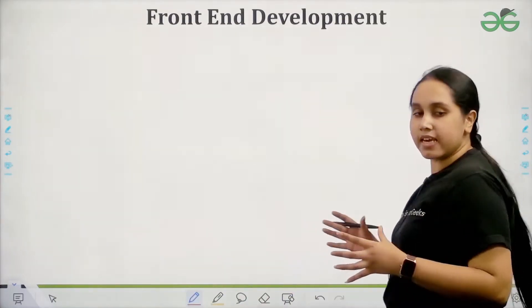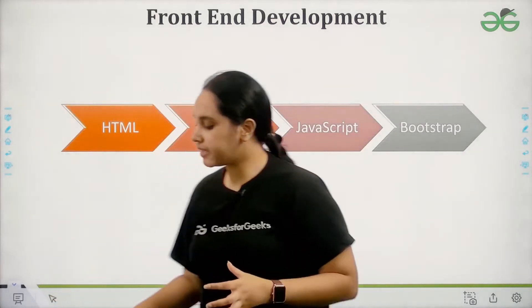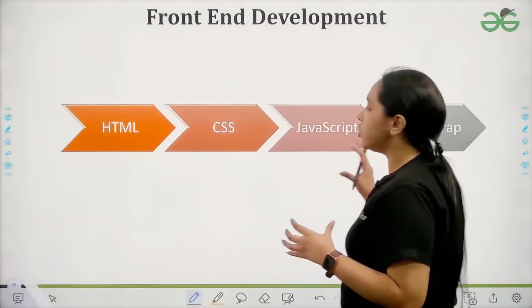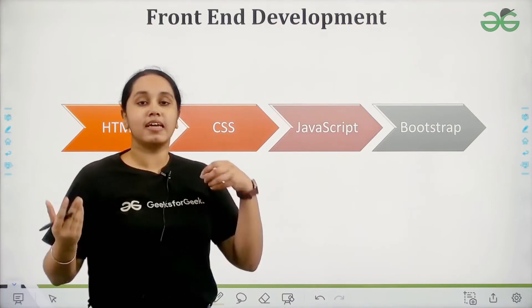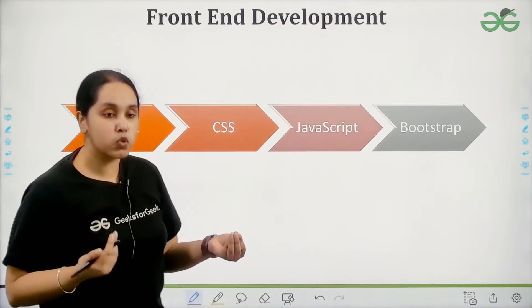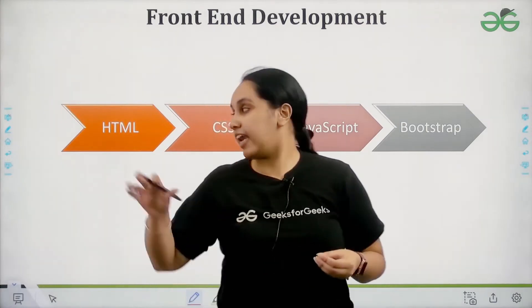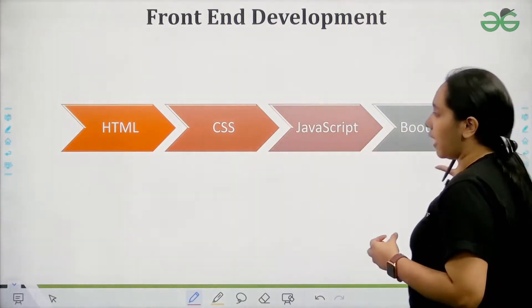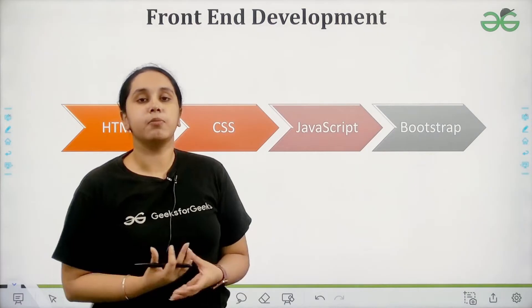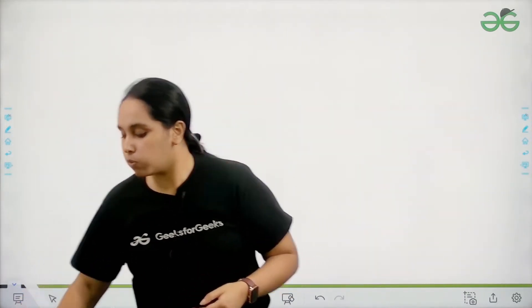Let's understand front end development. These are some of the examples of front end languages: HTML, CSS, JavaScript, and Bootstrap. These are some of the examples of front end languages. Now let's move forward to back end languages.